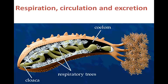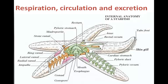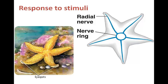Echinoderms also use their tube feet in respiration — oxygen diffuses from water through the thin membranes of the tube feet. Some exchange water through all body membranes in contact with water; others have thin-walled skin gills that are small pouches extending from the body. Many sea cucumbers have branched tubes called respiratory trees through which water passes for oxygen. Circulation takes place in the body coelom and the water vascular system, while excretion of cellular waste occurs by diffusion through thin body membranes.